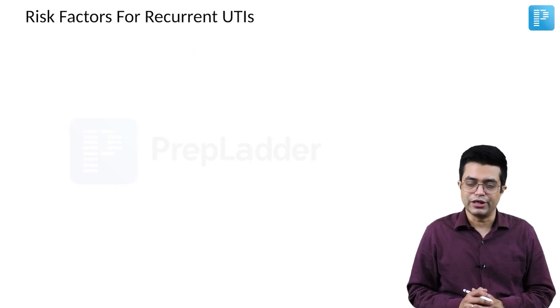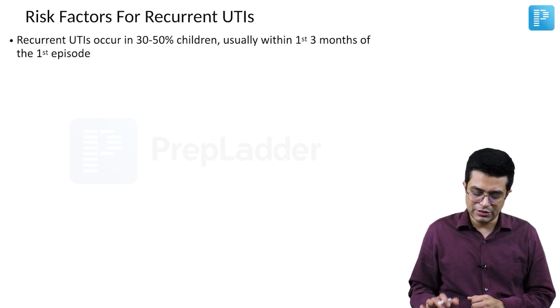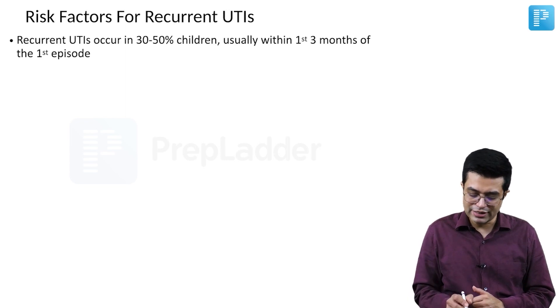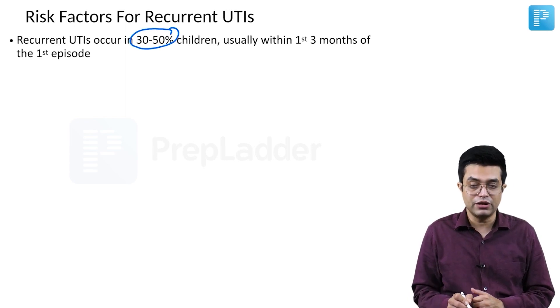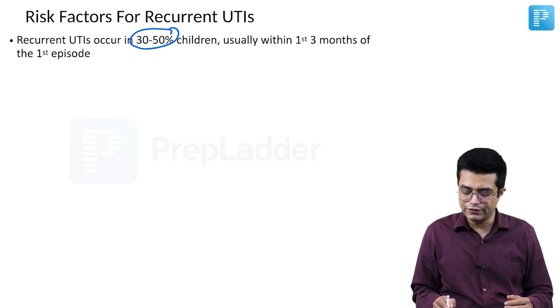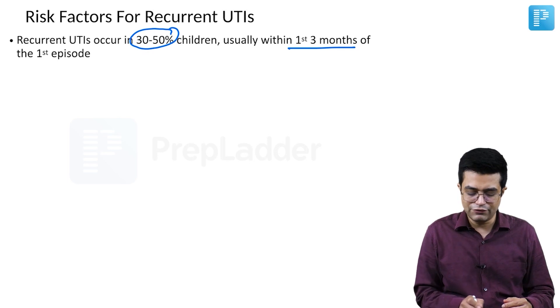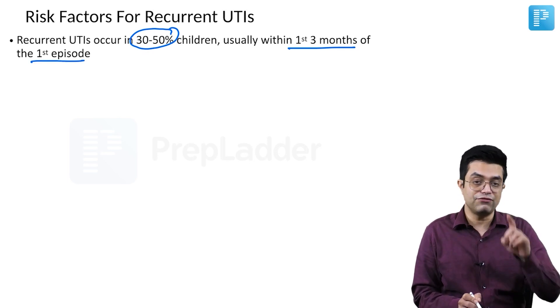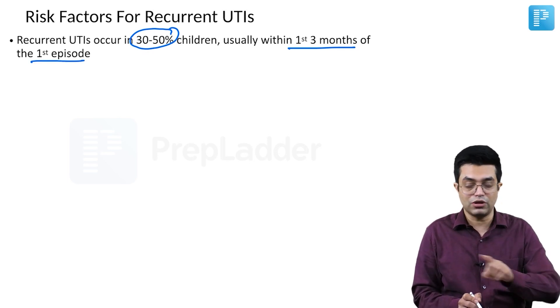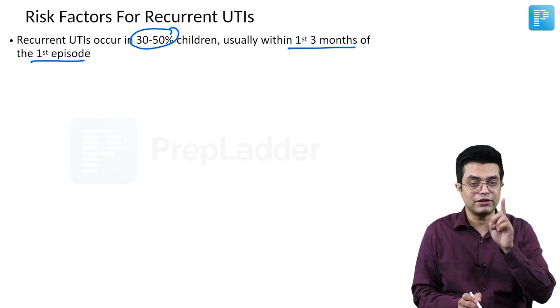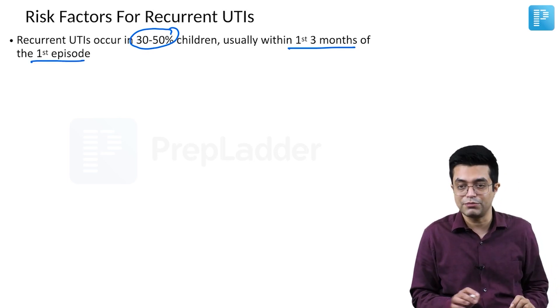What are the risk factors for recurrent UTI? Remember that recurrent UTIs occur in 30 to 50% of children, and the majority of them will occur within the first three months of the first episode — not by age, but within the first three months of the first episode.